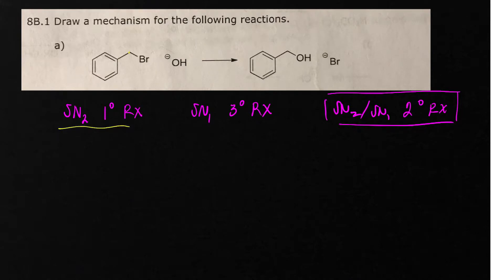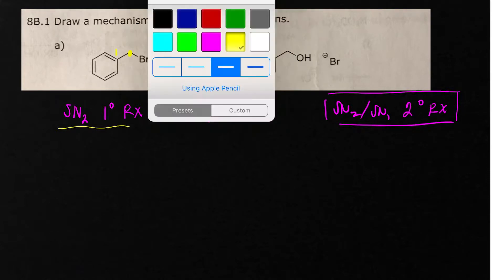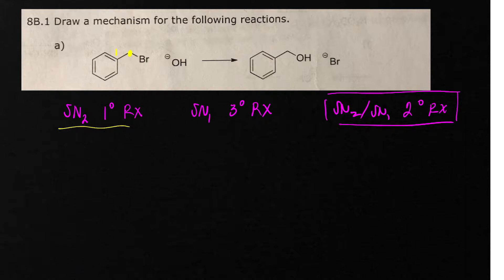This guy right here is a primary alkyl halide because it's connected to one carbon and so it's going to proceed by an SN2 reaction. The curved arrows that we use for that are to take this negative charge and kick off the bromide.